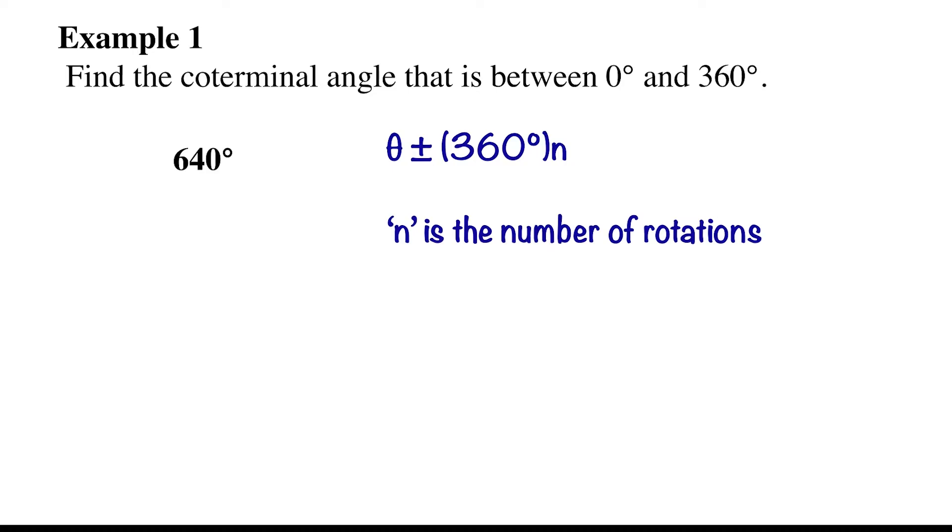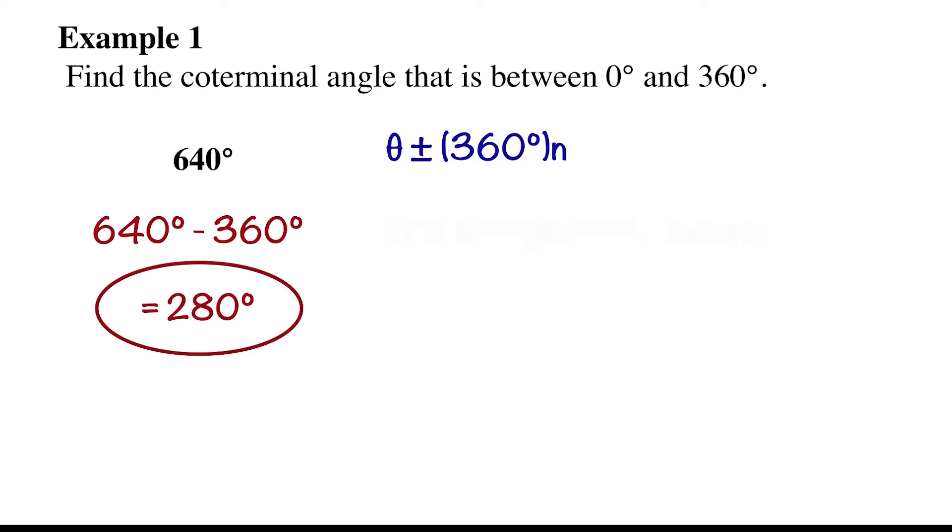If our angle theta is positive, then we just subtract 360 until we have an angle that is between 0 and 360. Here, we get a coterminal angle of 280 degrees.